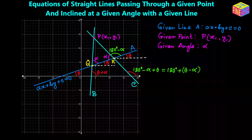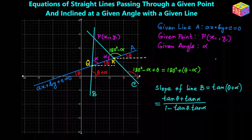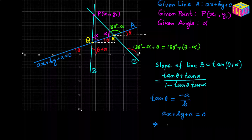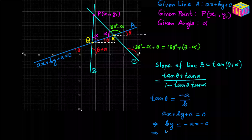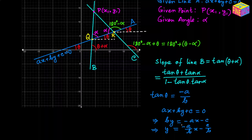Now that we know the angles of inclination, finding the slopes is straightforward. The slope of line b is tan(theta + alpha). From the given equation ax + by + c = 0, converting to slope-intercept form gives slope = −a/b, which equals tan(theta). So tan(theta) = −a/b.